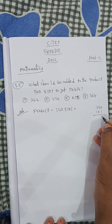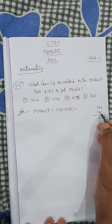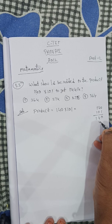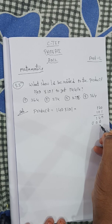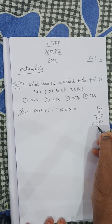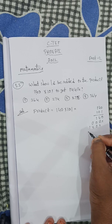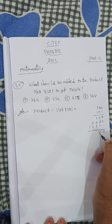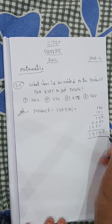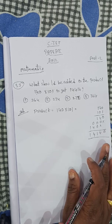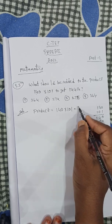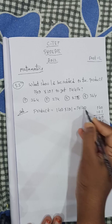Working through the multiplication: 140 × 101. The digits work out as: 1, 4, 1, 4, 1 — carrying through, the answer is 14140.